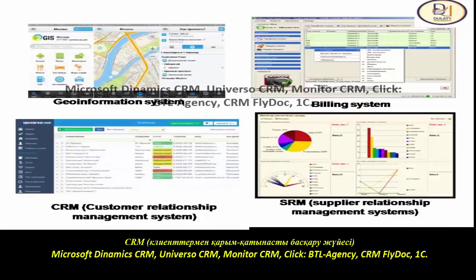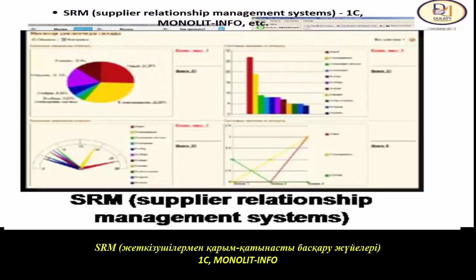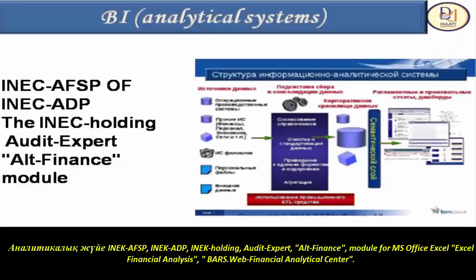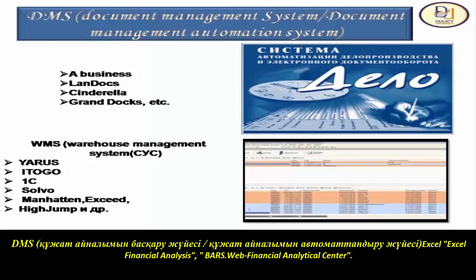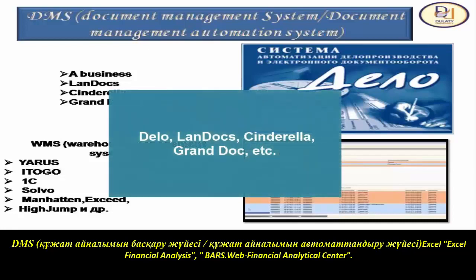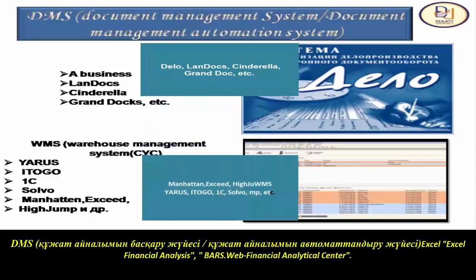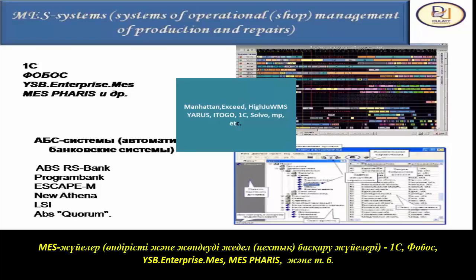CRM is a customer relationship management system. SRM is a supplier relationship management system. Analytical systems include: INEQ, RFSP, INEQ ADP, INEQ Holding, Audit Expert, Alt Finance, Module 4, Microsoft Office Excel, Excel Financial Analysis, BARS, and Web Financial Analytical Center. DMS (Document Management System) and Document Management Automation Systems are also covered, along with Warehouse Management Systems, MASS Systems, and Systems of Operational Shop Management of Production and Repairs.